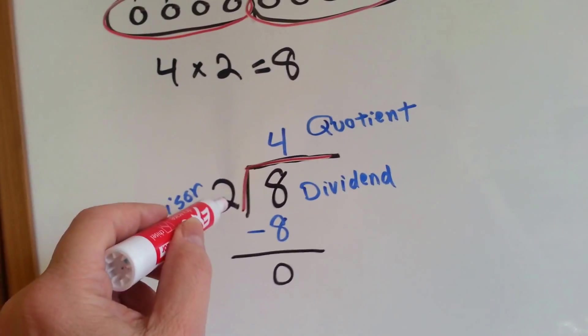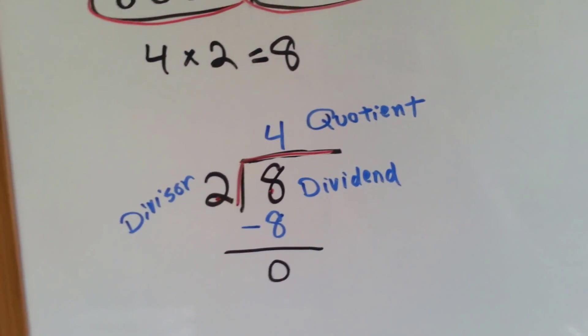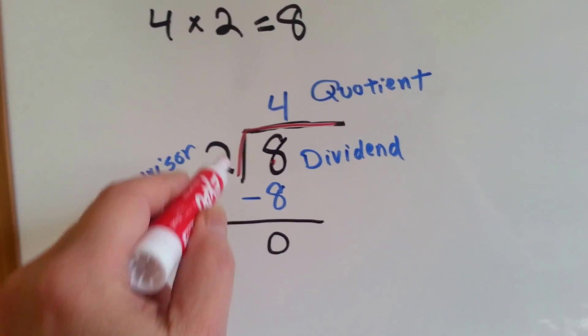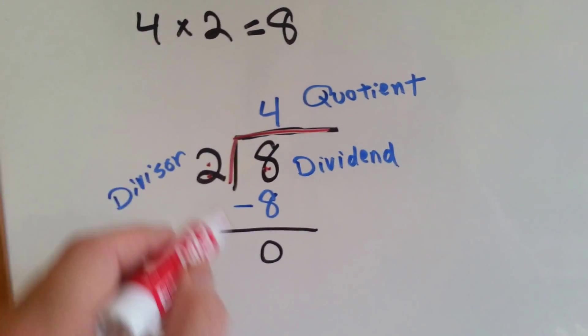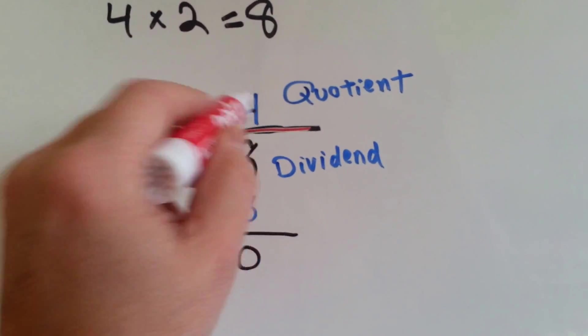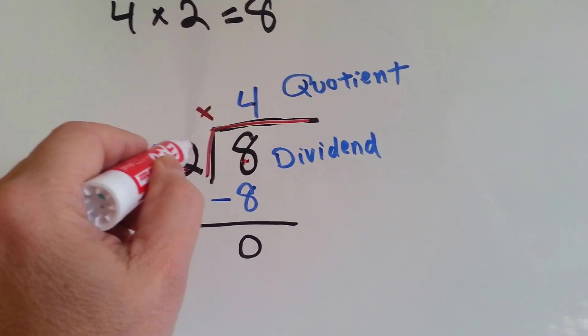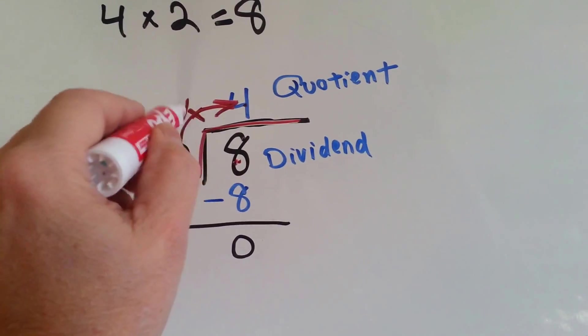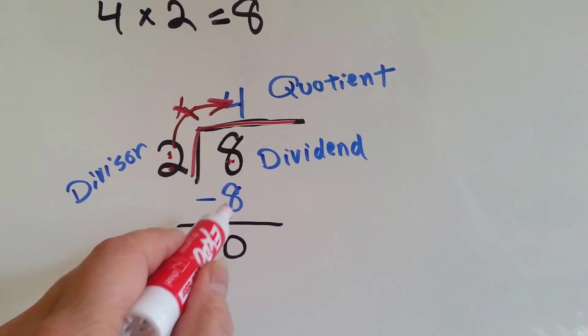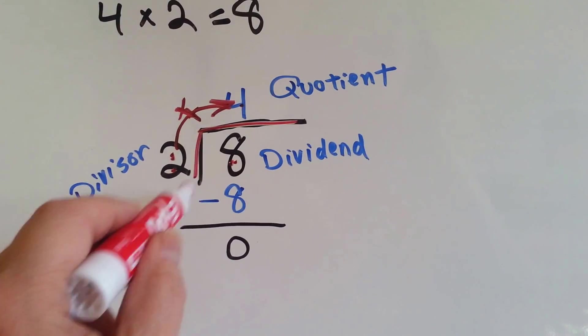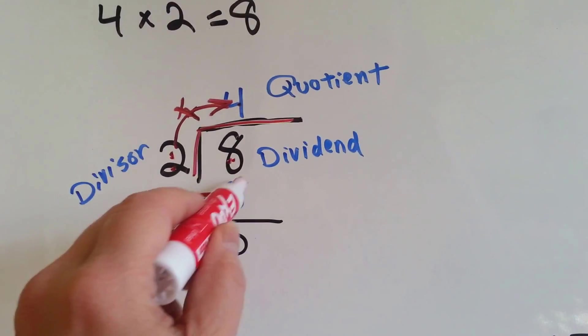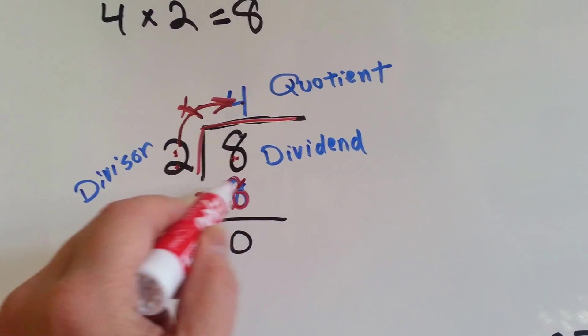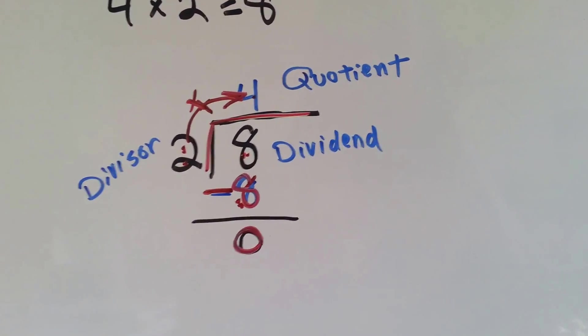How many 2's are inside of 8? There's 4 of them. And then we say 2 times 4 is 8, and we put the answer down here. So it goes here, and we subtract this 8. 8 take away 8 is 0. See how we did that?